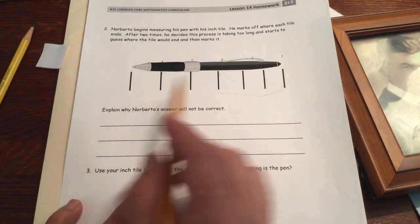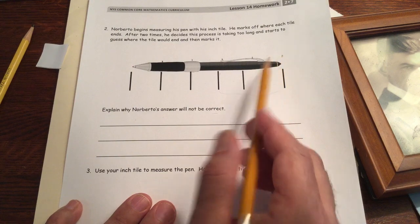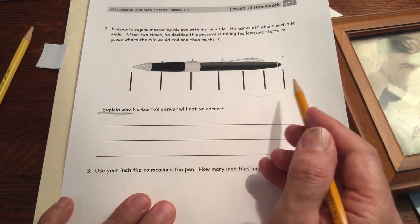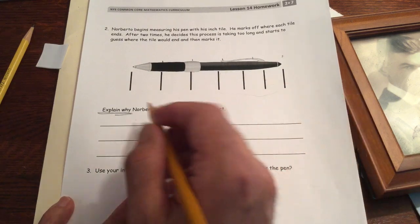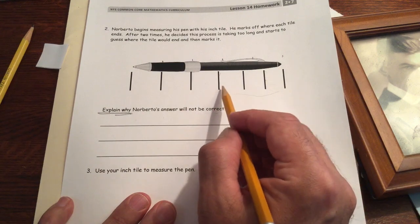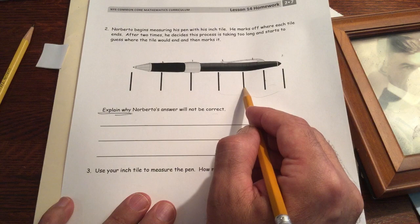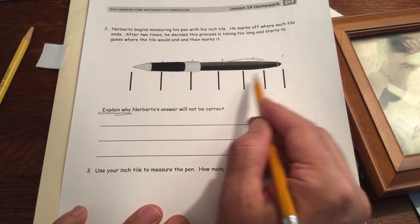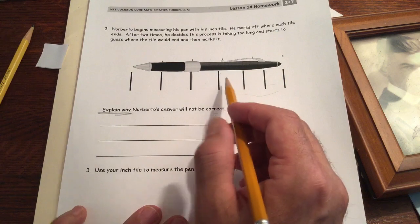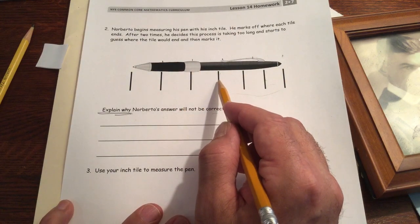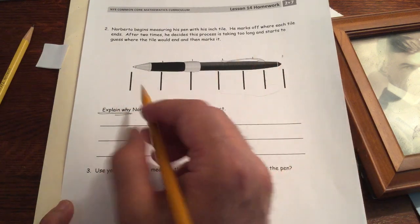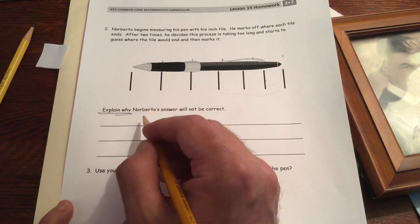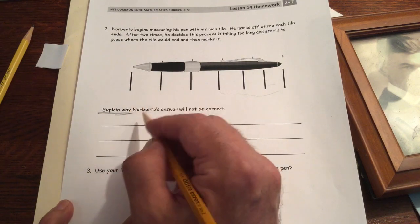So the question is though, not what he should have got, but why. We got to say why will his answer not be right. And what is the reason? What is the mistake that he made? So what did he do wrong? His answer is not going to be right because all of his units are not the same size. This one's really small. That one's kind of small. This one is close, but it's too small. So when he didn't use the tile, then he started guessing and his guesses weren't very good. They're not, so we got to say that his units are different sizes.